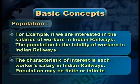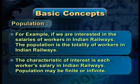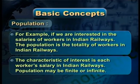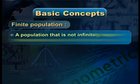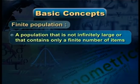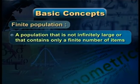The characteristic of interest is each worker's salary — we are interested in finding out the average salaries. Population may be finite or infinite. A finite population is one that is not infinitely large, or that contains only a finite number of items. Finite population means the whole set of items can be counted.